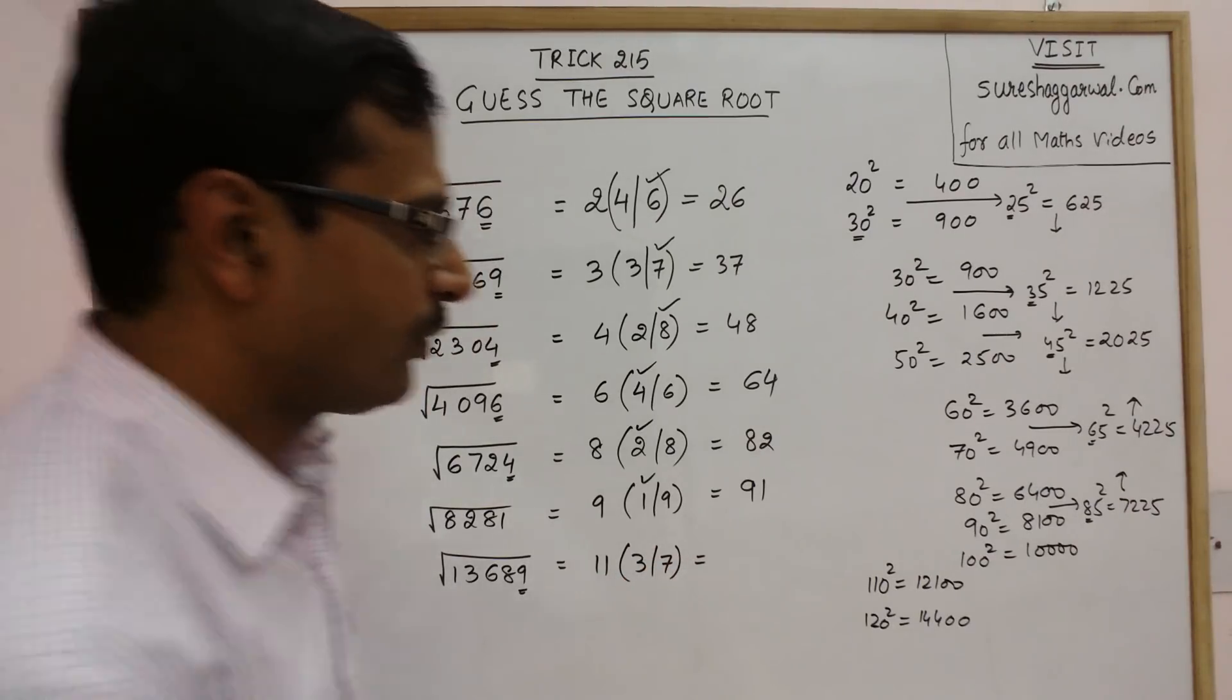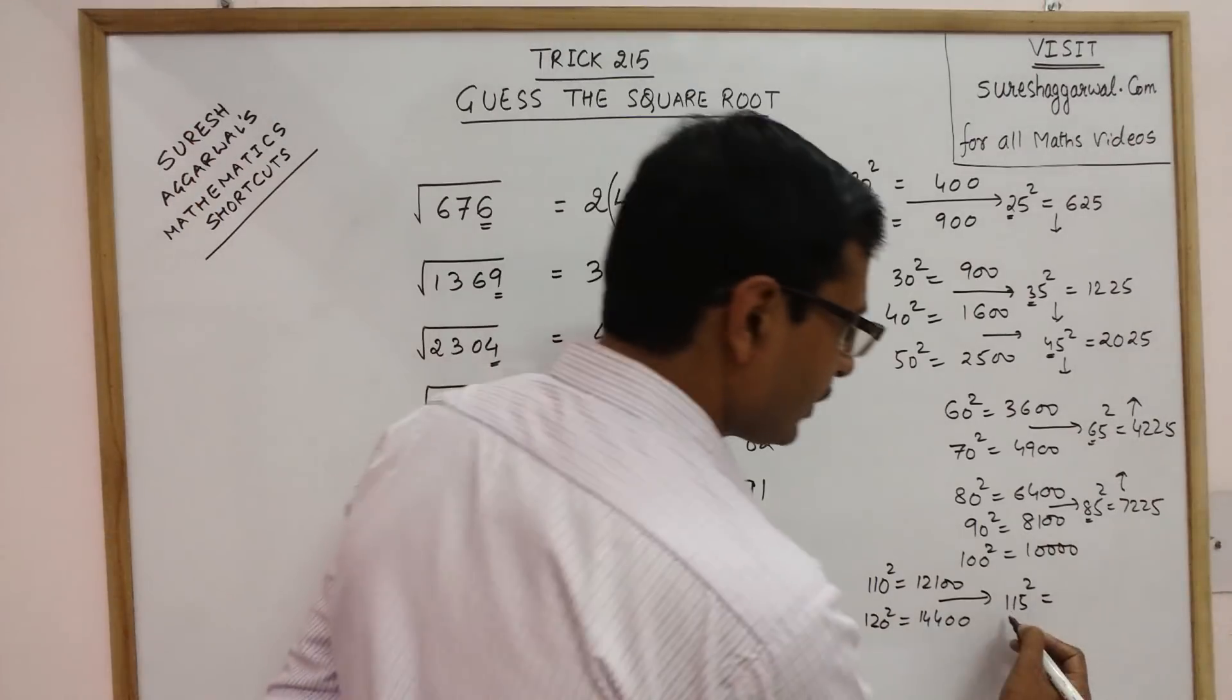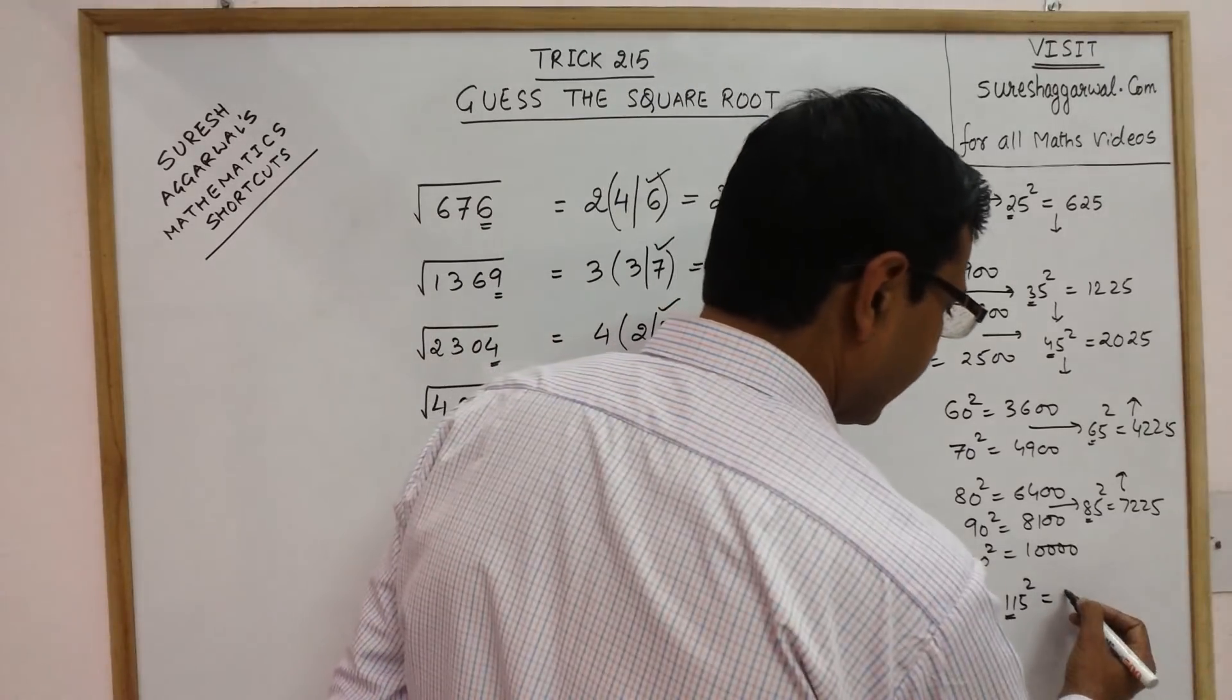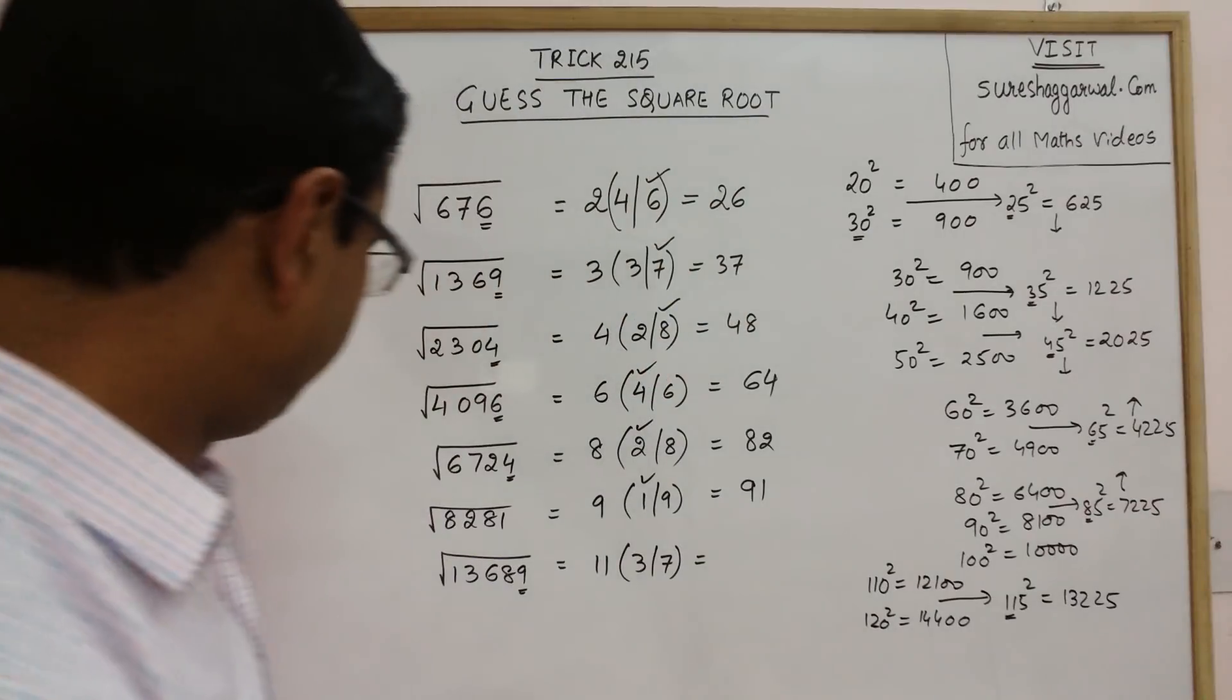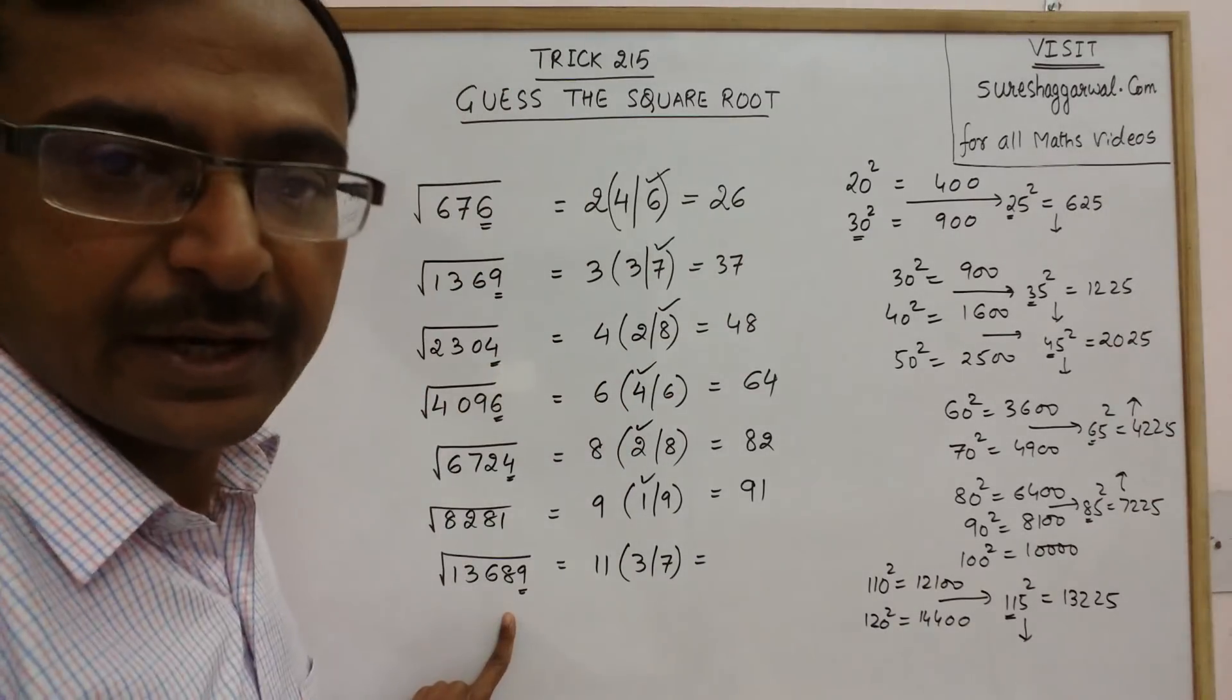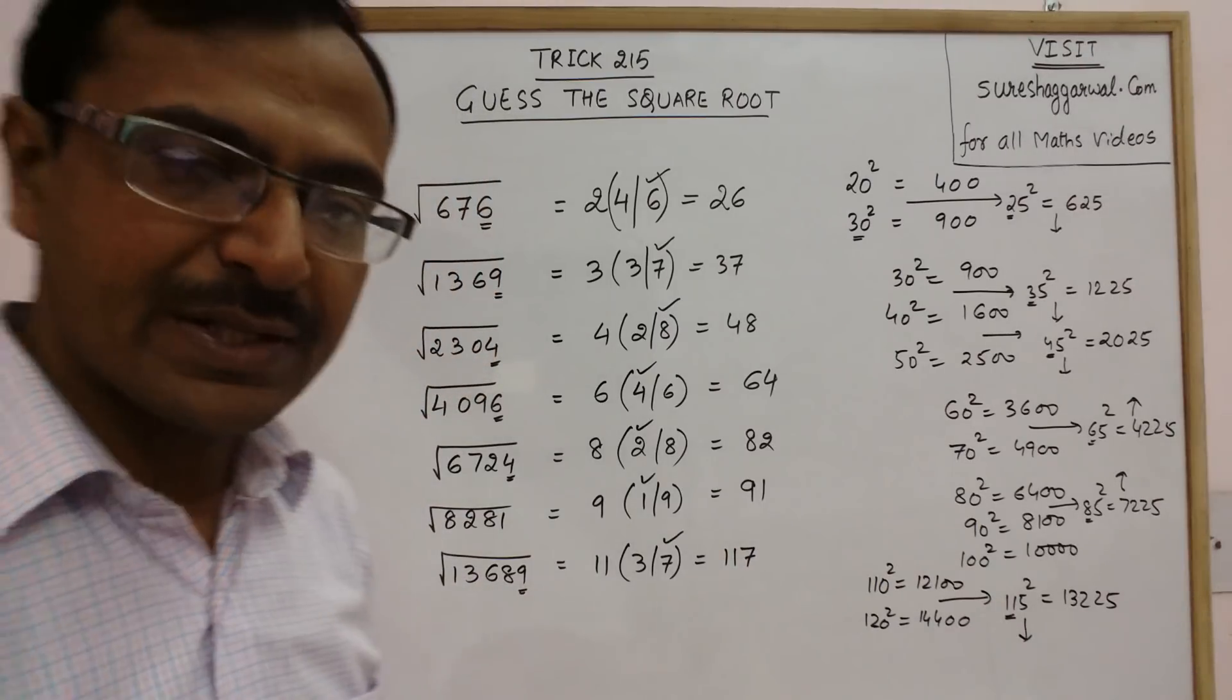Now if you want to know which is the correct answer, take the intermediate number 115. Now see here we have 11. Its consecutive number is 12. So 12 into 11 is 132 followed by 25. Now see 13689, this number is greater. So our answer will be greater than 115. So this is 117 is the square root of 13689.